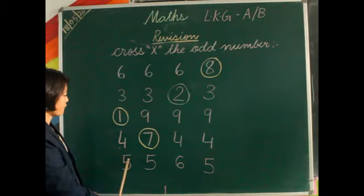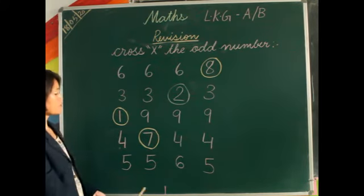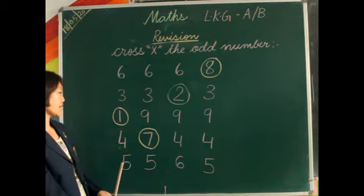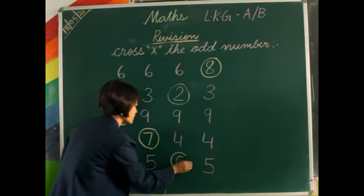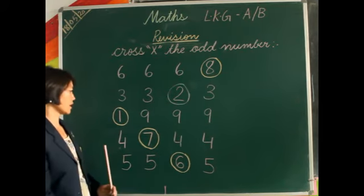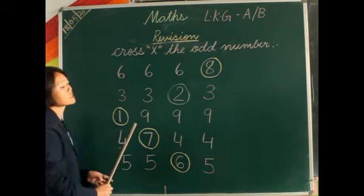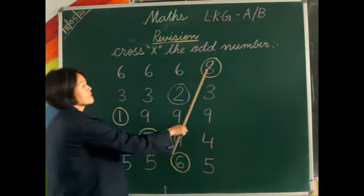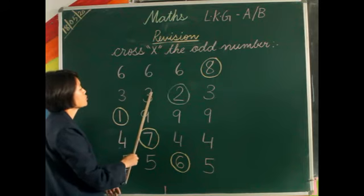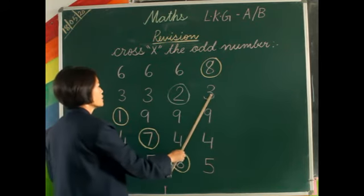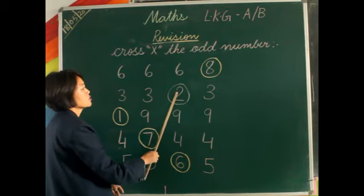Next one: 5, 5, 6, and 5 — from here, tell me which number is odd. Yes — number 6. So once again we will repeat: 6, 6, 6 are the same numbers and 8 is odd, so we circle the 8. Now here: 3, 3, 3, 3, 2, and 3 — from here, 2 is odd, so we circle the 2.